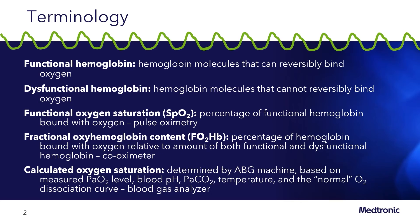Before we discuss pulse oximetry in detail, I want to take a few minutes to discuss key terms related to the types of hemoglobin as well as the way oxygen saturation is measured. There are two clinical categories related to hemoglobin: functional hemoglobin and dysfunctional hemoglobin.